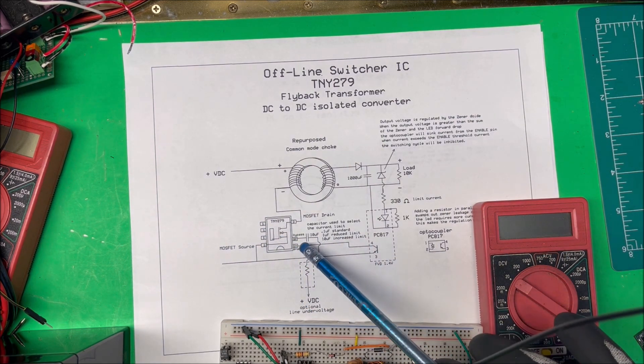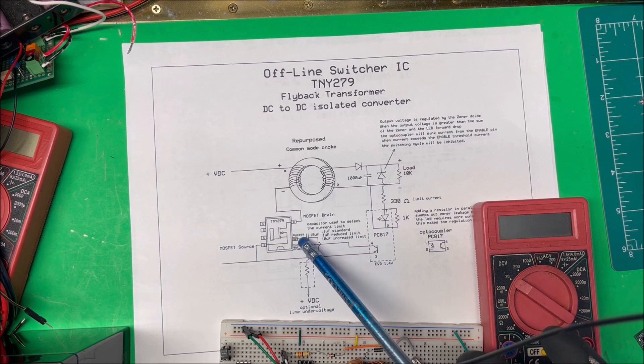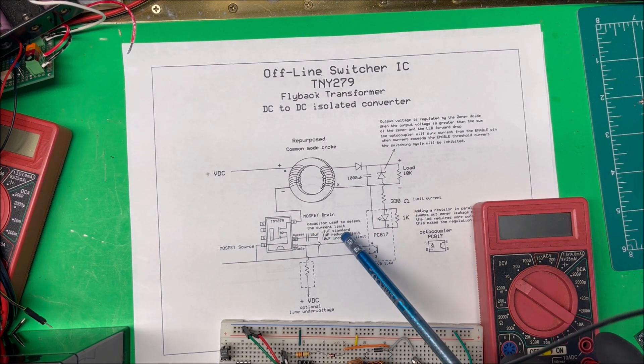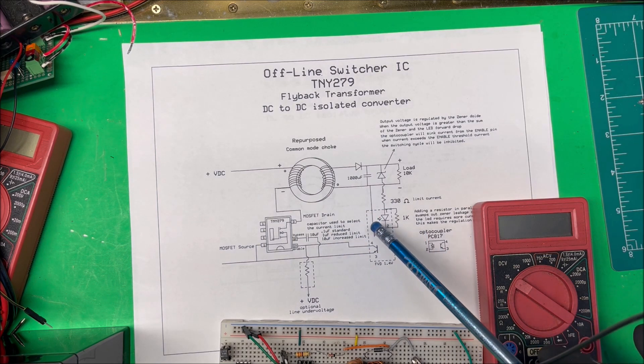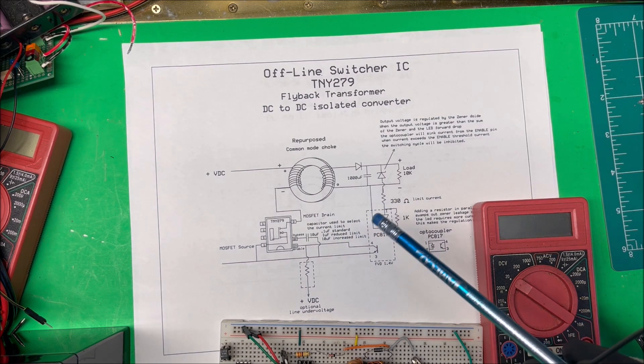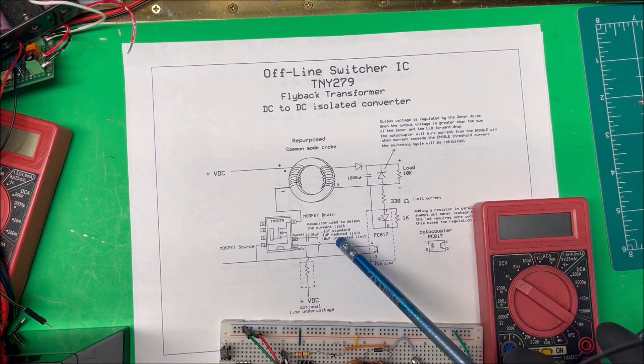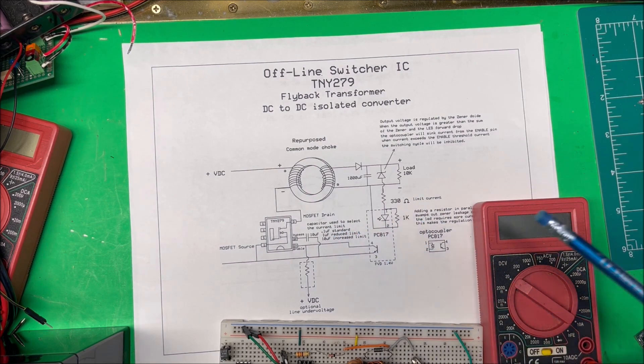They have a bypass pin that's going to set the current rating. A 0.1 microfarad will be the standard rating. If you go one microfarad, it'll reduce the limit, and 10 will increase the limit. I got a 10 in there. The only other pin we have to deal with is this enable pin.